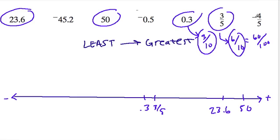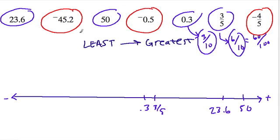Now we have our negative numbers. Negative 45.2 is the furthest to the left. Unlike positive 50, which had the largest distance from zero, this also has the largest distance from zero on the negative side, but that means it's the smallest number. So negative 45.2 is all the way to the left. Then we have negative 4 fifths and negative 1 half (negative 0.5). How does 4 fifths compare to a half?